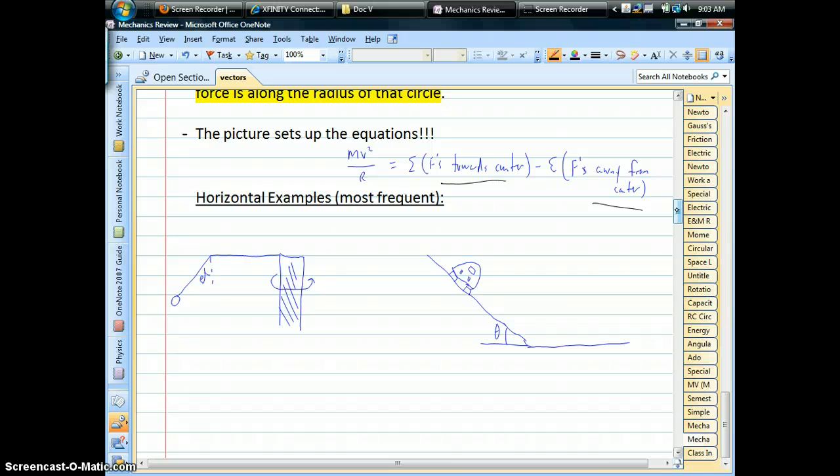The most frequently asked cases for horizontal circles would be something like the swing ride at Great America, and a car going around these unbanked curves, like a racetrack or something.